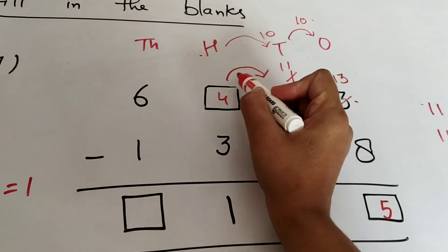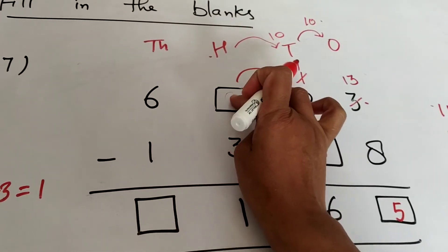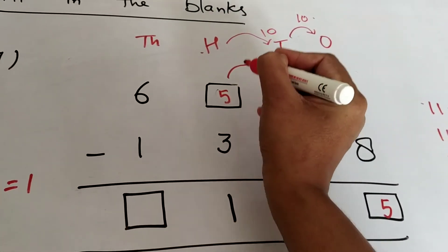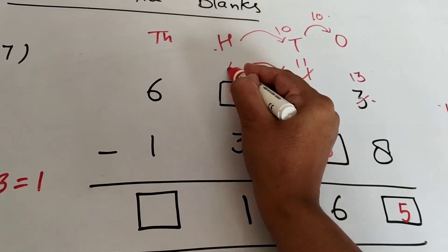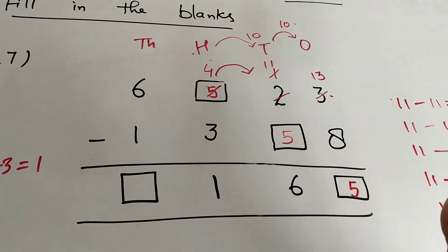Why? Because we have taken a borrow, that also we should consider. So after borrowing it should be 4, before borrowing it should be 4 plus 1, that is 5, and when we borrow it should become 4, so 4 minus 3 will be 1.